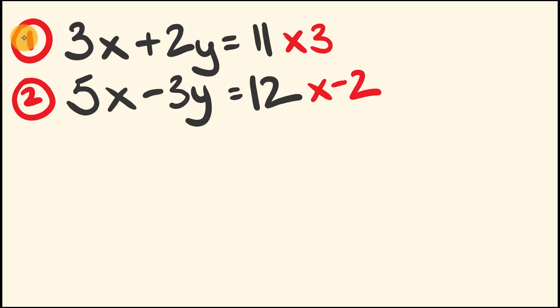We're going to get two brand new equations. Let's solve them. Let's multiply equation 1 by 3. 3x times 3 is 9x. This is plus 2y times 3, which is plus 6y. And this is equal to 11 times 3, which is 33.